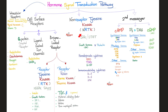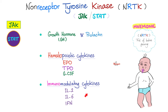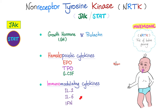Now, non-receptor tyrosine kinase. To remember the hormones that utilize this pathway, imagine a baby growing. What does a baby need? Growth hormone to grow. Prolactin for breastfeeding — it's pro-lactation. EPO (erythropoietin) to make red blood cells. TPO (thrombopoietin) to make platelets. Granulocyte colony-stimulating factor to make granulocytes like basophils, eosinophils, and neutrophils. And interleukins and interferon for lymphocytes.